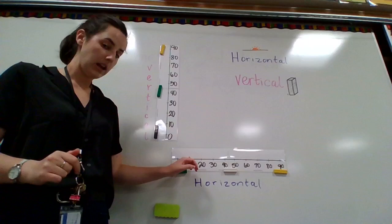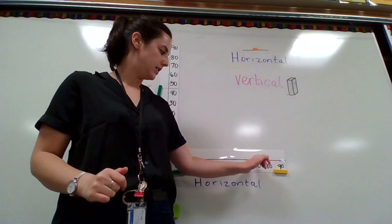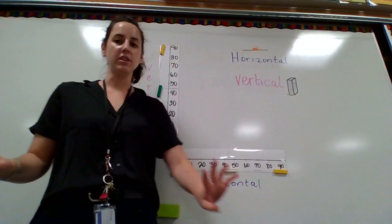So when we count by tens, we make jumps of 10. So we go from 0 to 10, 20, 30, 40, 50, 60, 70, 80, 90, and we're going to keep going with that.